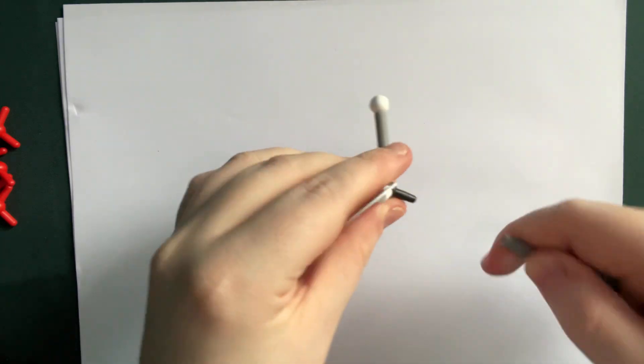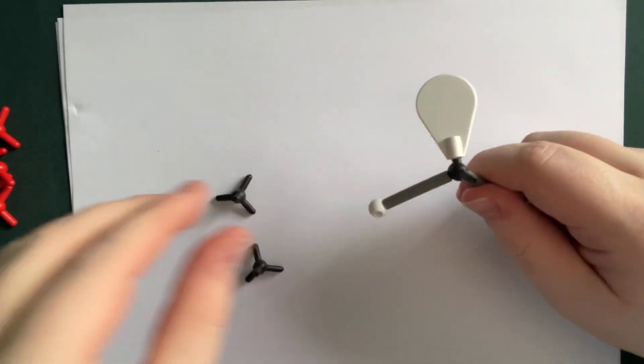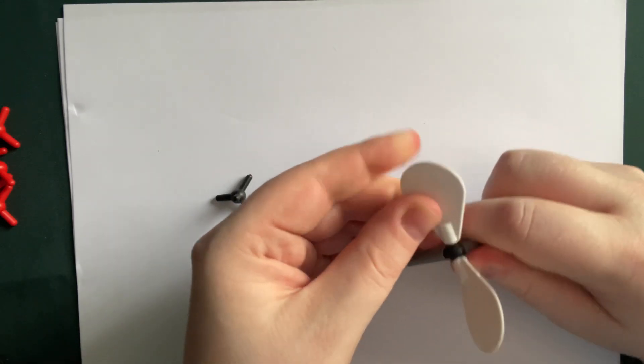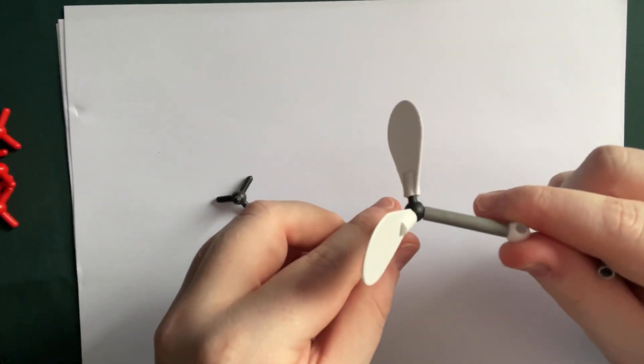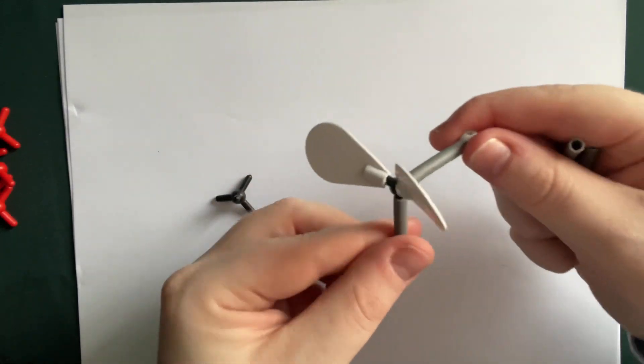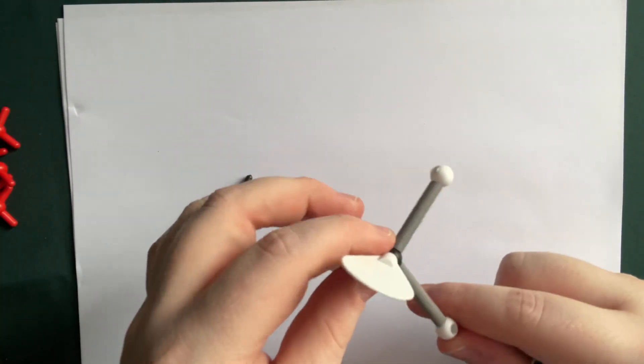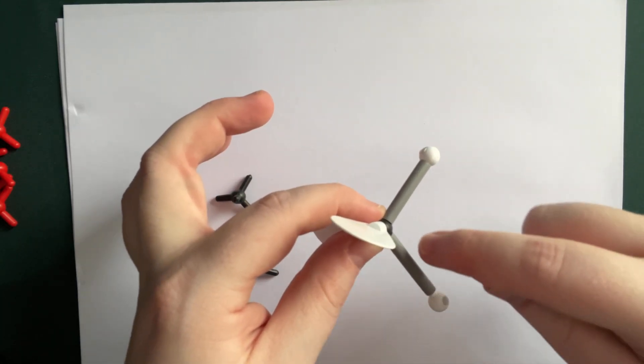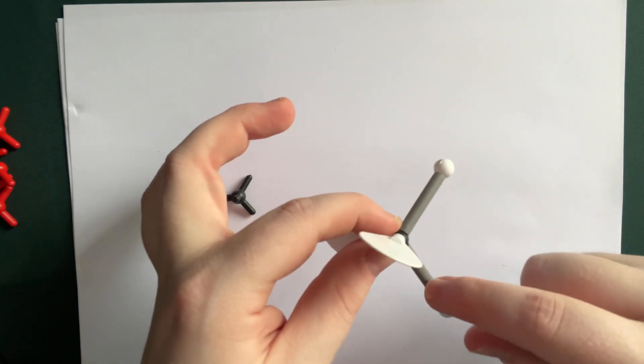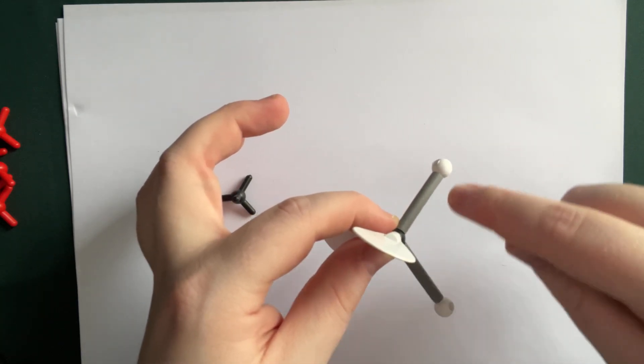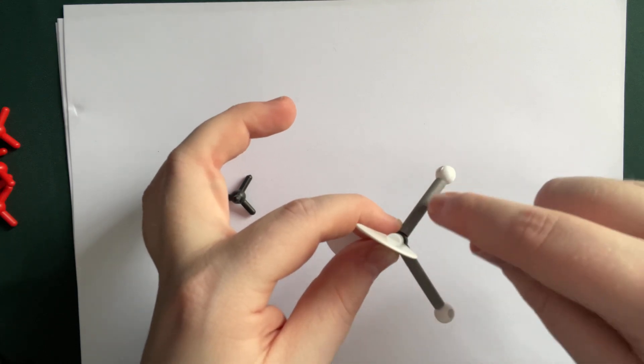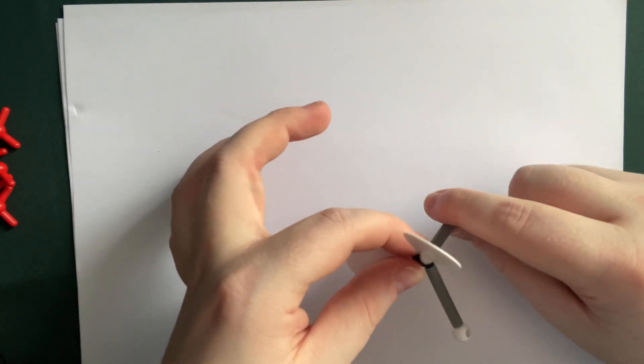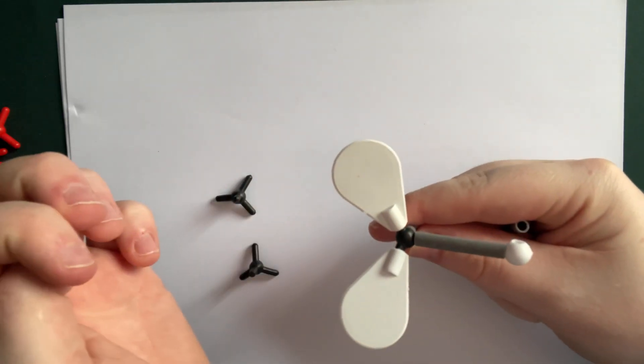And if you remove a further bond and add another lone pair, so meaning you have two lone pairs, kind of looks like a Mickey Mouse, then you get the bent, or angular, sometimes called angular, you get the bent structure. So we revert back to the bent structure, where this angle is probably going to be less than 109.5 degrees. And this time we have two lone pairs.